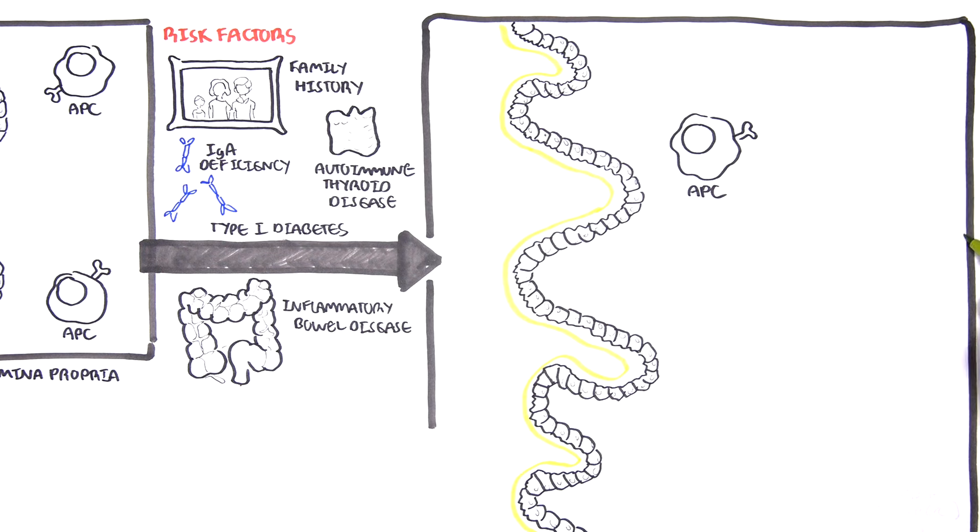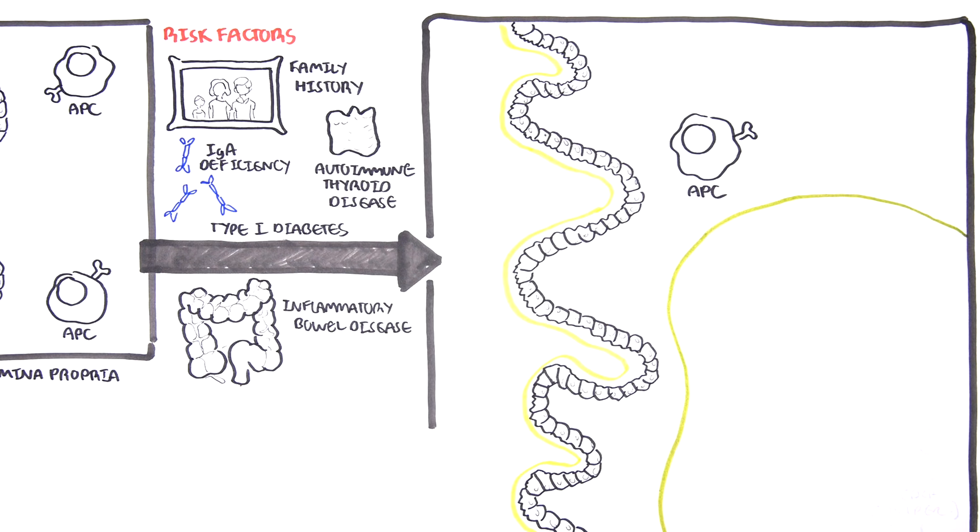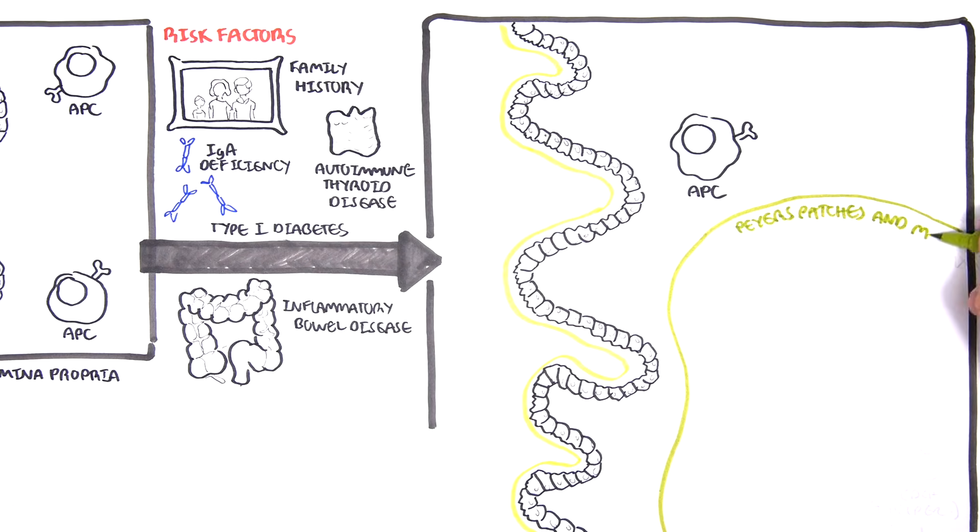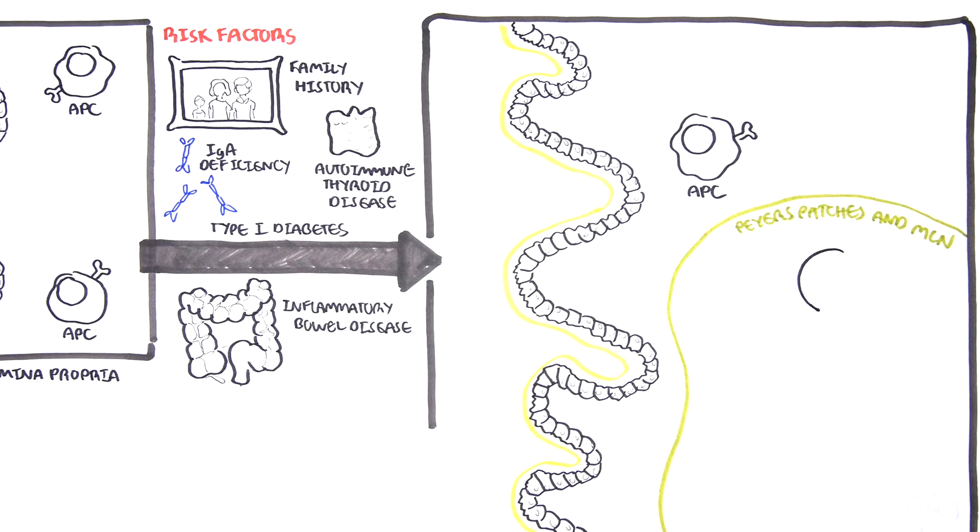In some parts of the small intestine, there are also things called Peyer's patches, and also nearby there are mesenteric lymph nodes, which are really important lymphoid tissues which help activate an immune response. In these tissues, we can find what's called naive T cells, which are basically T cells, an immune cell, which is not activated.